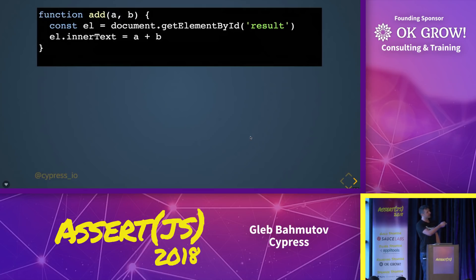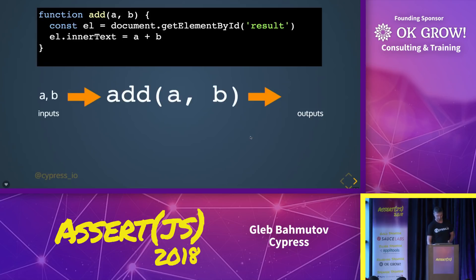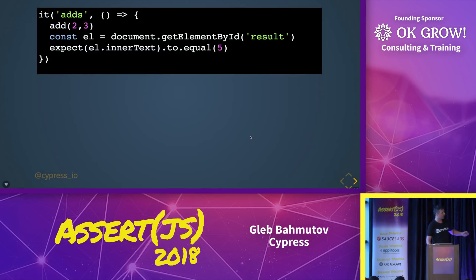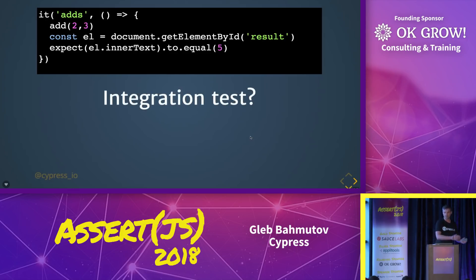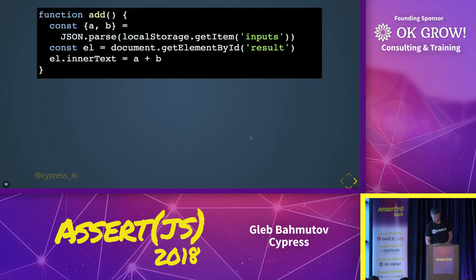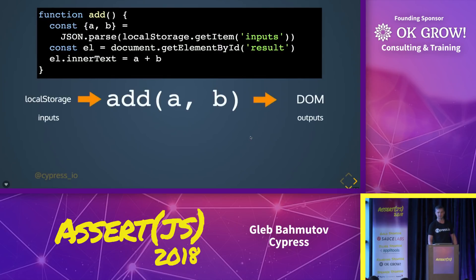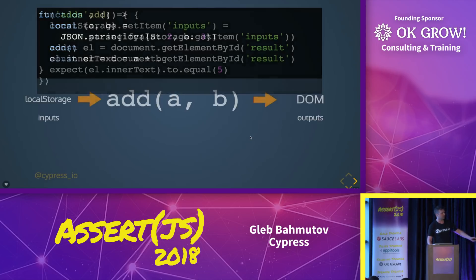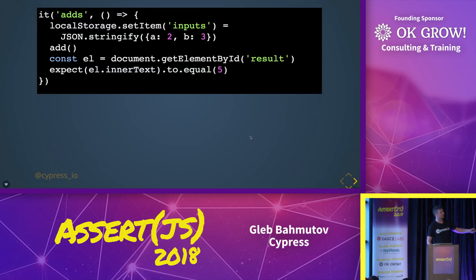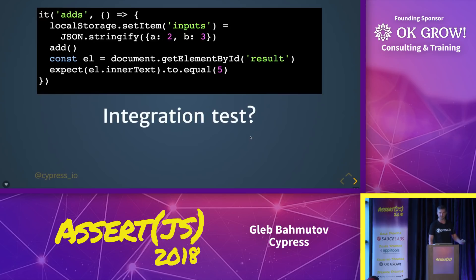What if my function, instead of returning a result, grabbed document, grabbed an element, and set the inner text? Not returning a value, but writing it to the DOM. It gets the inputs, but writes into the DOM instead of returning the result. So our test could do the same thing — it would call the function, then go grab that element and look at its inner text. But for some reason, we call this not a unit test — we call this an integration test, because it involves interacting with the DOM. What if A and B came from local storage instead of arguments? So my function gets inputs from local storage and writes into the DOM. I can write the arguments into local storage, call the function, grab the DOM, look at the result. Why do we call this an integration test? It still is a unit test.